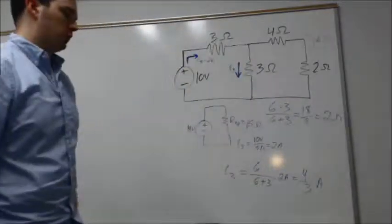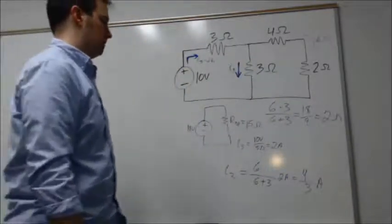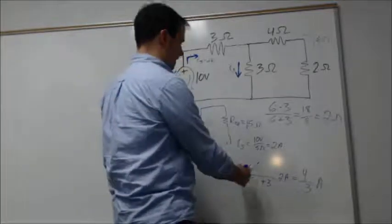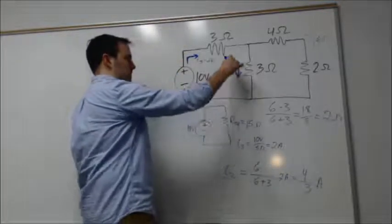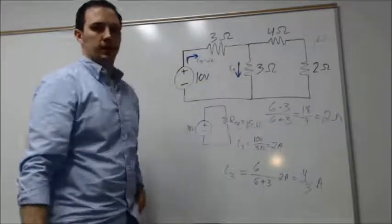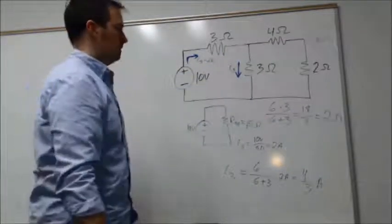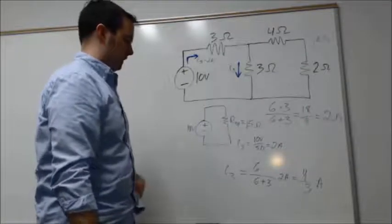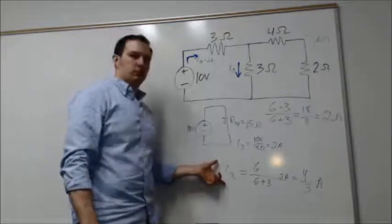We'll get 4/3 of an amp from that. That's telling us 4/3 of an amp traveling through this branch. The remainder of the current from the 2 amps is obviously then going to flow around the other side of the circuit.